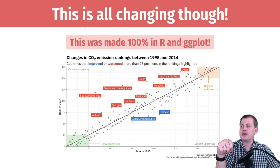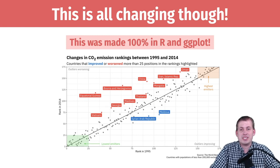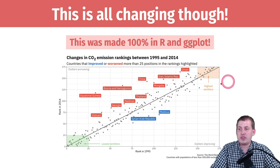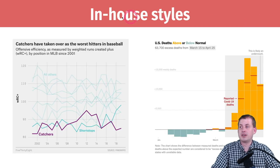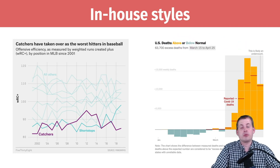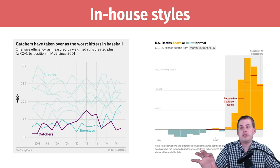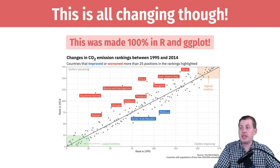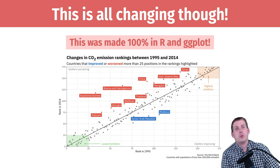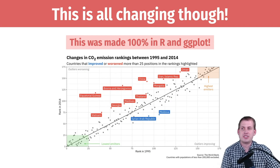For example, this chart showing the changes in CO2 emission rankings was made entirely 100% in R and ggplot — nothing was done in Illustrator. The arrows, the text, the extra annotations, the 'improved' and 'worsened' labels here — prior to ggtext being available a few months ago, that was impossible. That's a very common technique at places like the New York Times: instead of a legend, they use colored text in the title to show what's what — like 'US deaths above or below normal.' You couldn't do that in R before, so you'd have to export to PDF, put it in Illustrator, and make all your fancy highlights there.